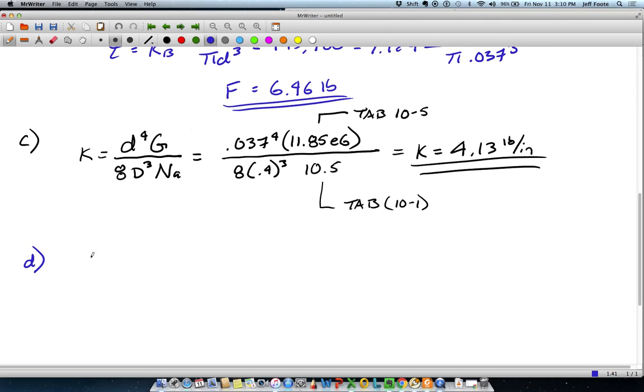For d, estimate the solid length of the spring. There's a few ways to go about this calculation, but if we call it force is just the stiffness times the axial displacement, which we'll call y, we know the maximum force that the spring can hold, we know the stiffness, so we can get the maximum amount of compression possible with this wire diameter. By taking the maximum force, which was 6.46 divided by the stiffness 4.13, we've got pounds over pounds per inch, which is going to give us units of inch. We have 1.56 inches is equal to y.